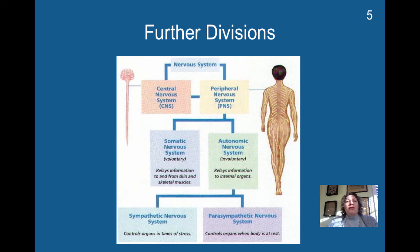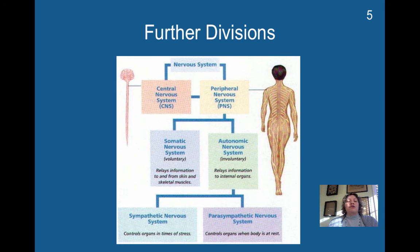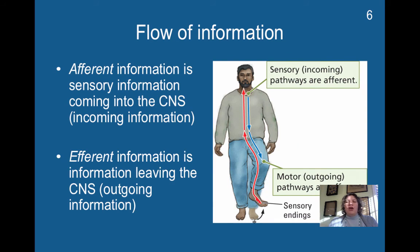The autonomic nervous system is comprised of the sympathetic and the parasympathetic. The primary role of the sympathetic is to prepare you for times of stress — you're going to fight or you're going to flee. The parasympathetic controls your body when it's primarily at rest or when you're trying to put your body at rest.